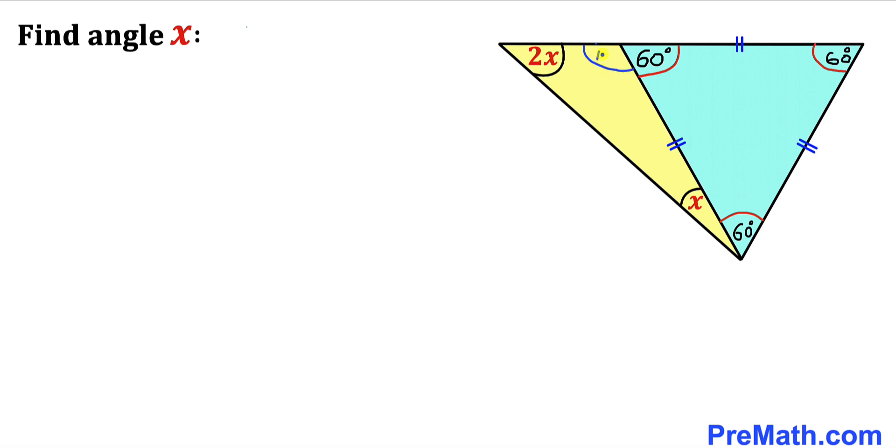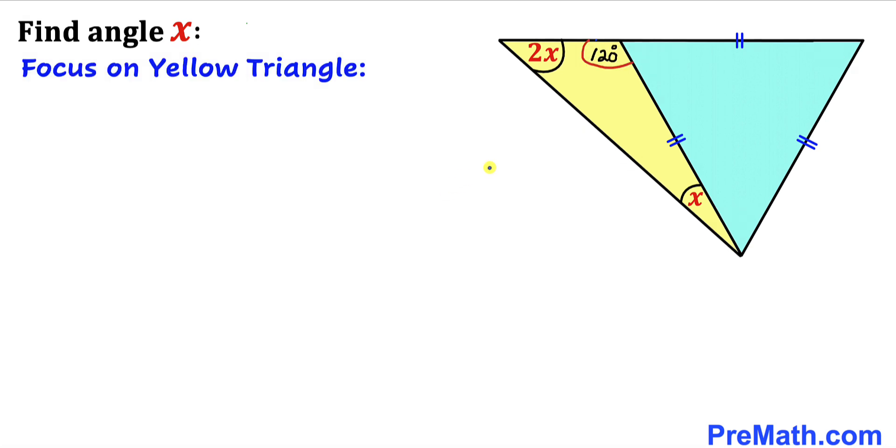And here's our next step. Let's focus on this yellow triangle and let's recall the triangle sum theorem once again. The sum of the three interior angles must be equal to 180 degrees.